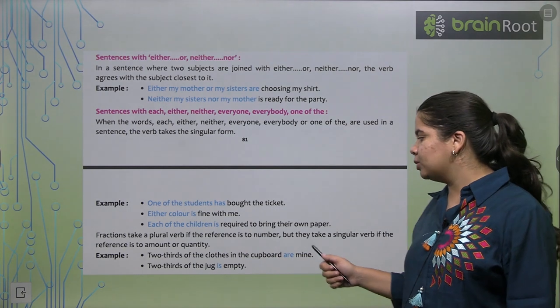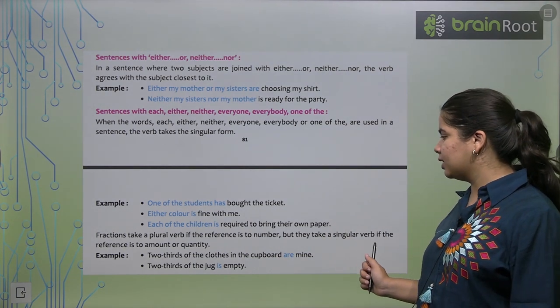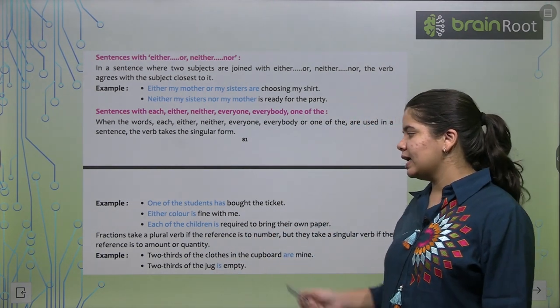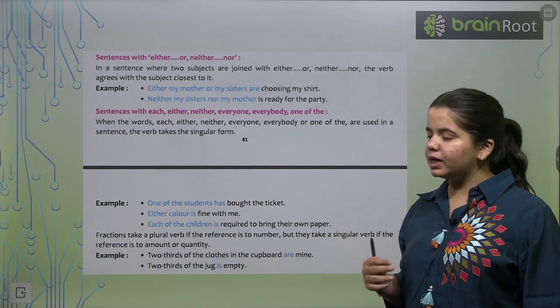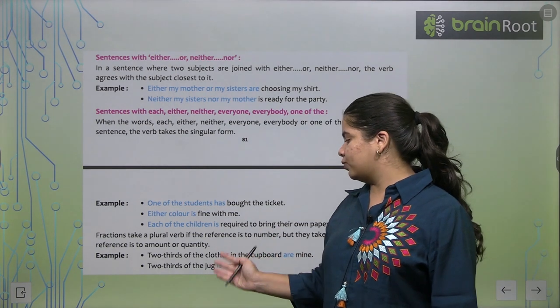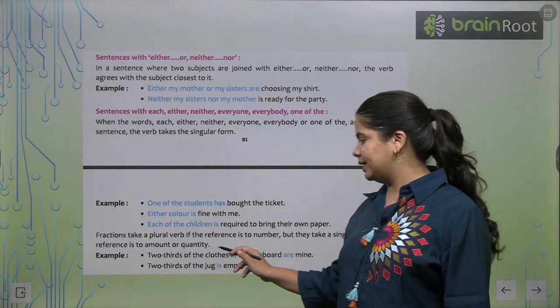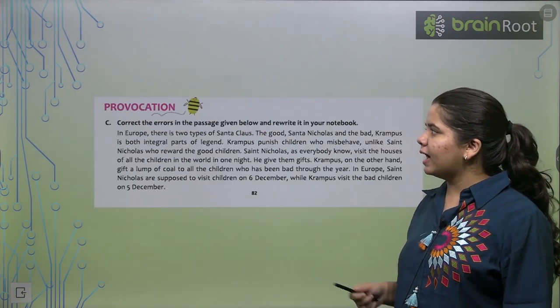Now, fractions take a plural verb if the reference is to the number, but they take a singular verb if the reference is amount or quantity. Jaise, two-thirds of the clothes in the cupboard are mine. Fraction hua na, two-third. Us ke saath hum ne kya use kara? Are. Two-thirds of the jug is empty. Toh, aapko yeh bhi dekhna hai ki wo basically countable hai ya uncountable hai.